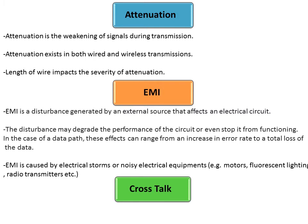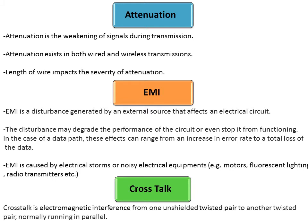Electromagnetic interference (EMI) is generated by external sources and can result in errors or loss of data. Crosstalk refers to interference from one twisted pair to another twisted pair. These are the three important terms to remember: attenuation, EMI, and crosstalk.